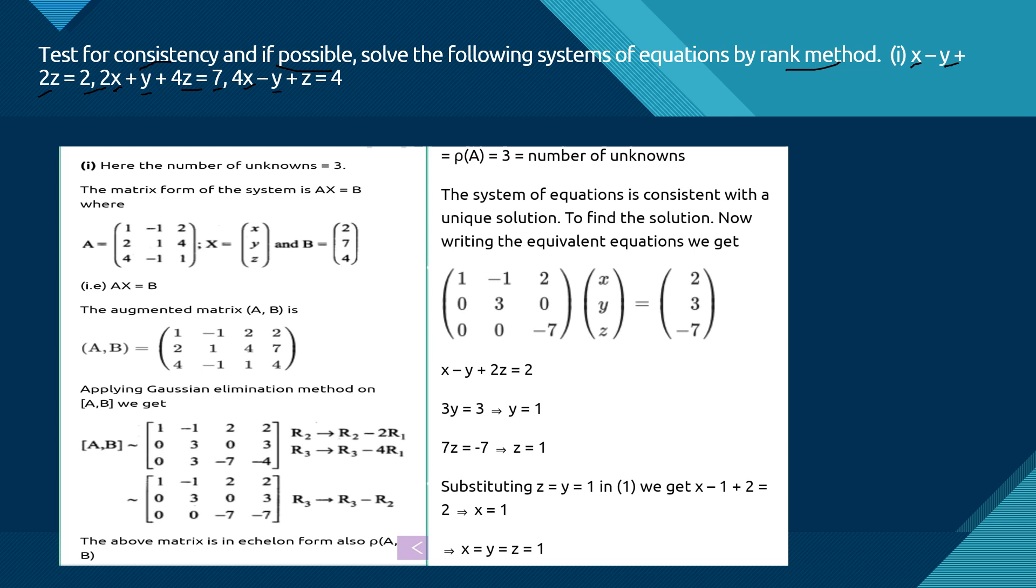4x - y + z = 4. Here the number of unknowns is 3, and it is in the form AX = B. Matrix A contains the coefficients, X is the column of unknowns, and B is the column of constants. Here is the augmented matrix [A|B].